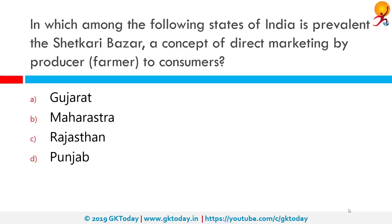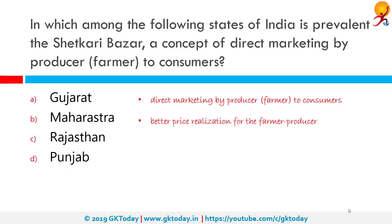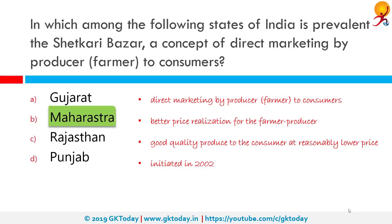In which state of India is the Shetkari Bazaar — a concept of direct marketing by producers to consumers — found? Shetkari Bazaar is a concept of direct marketing by farmers to consumers, circumventing intermediaries, so the produce reaches in good shape with minimum handling. This results in better price realization for the farmer and good quality produce to the consumer at a reasonable price. This helps small farmers with small quantities of perishable fruit and vegetables. In 2002, the government of Maharashtra decided to set up Shetkari Bazaar, with the Maharashtra State Agricultural Marketing Board as the nodal agency. There are 12 Shetkari Bazaars operating in the state and 33 additional markets have been sanctioned.